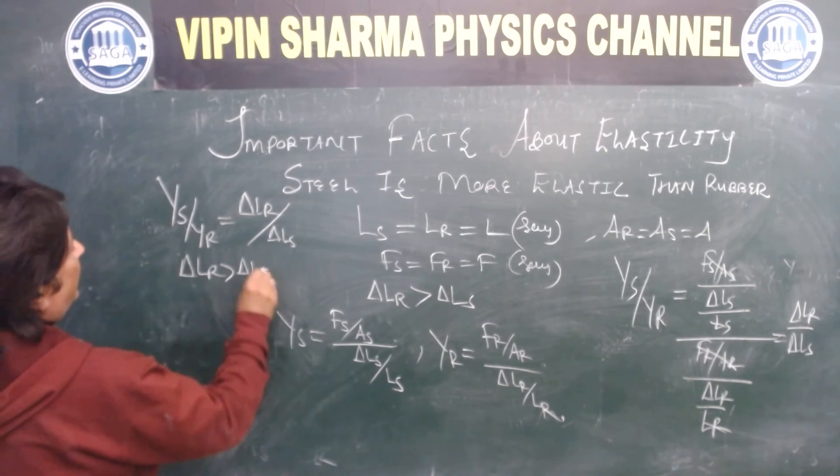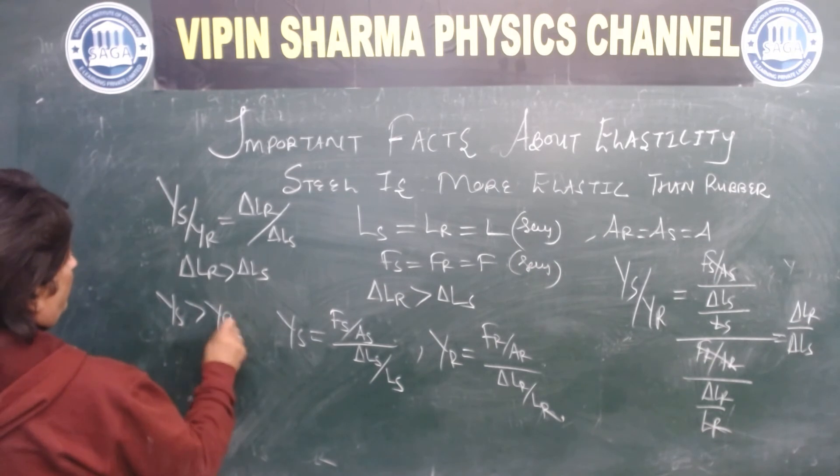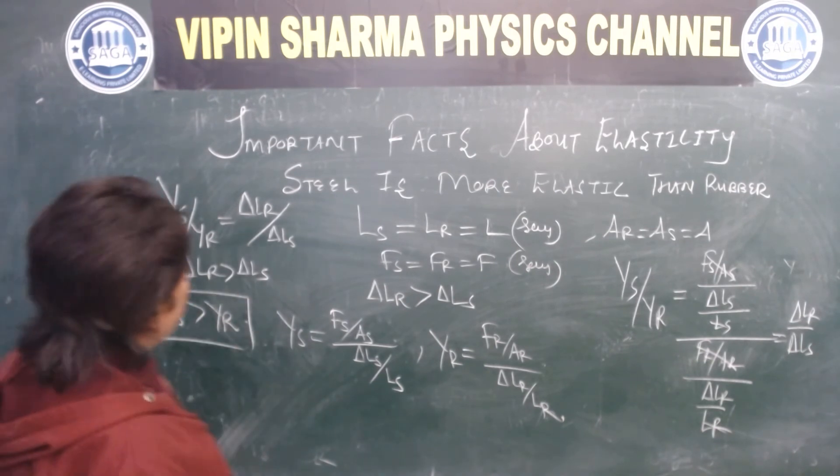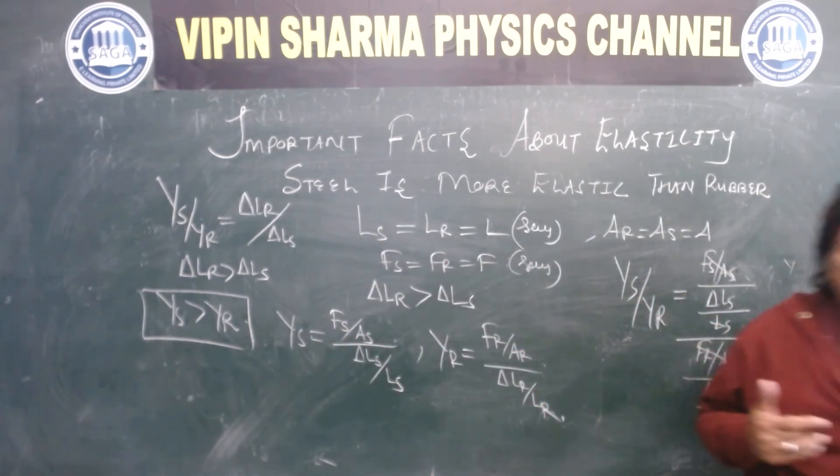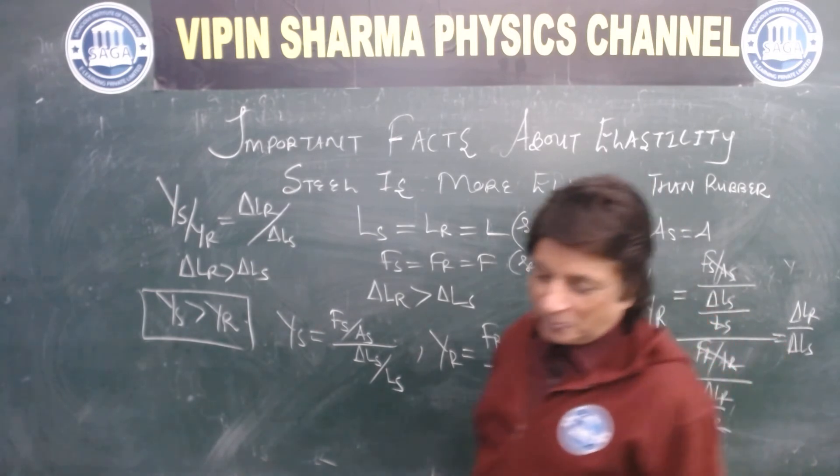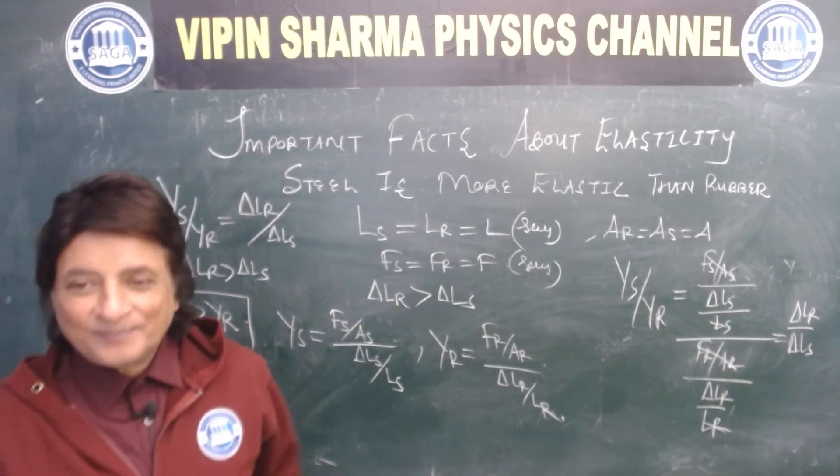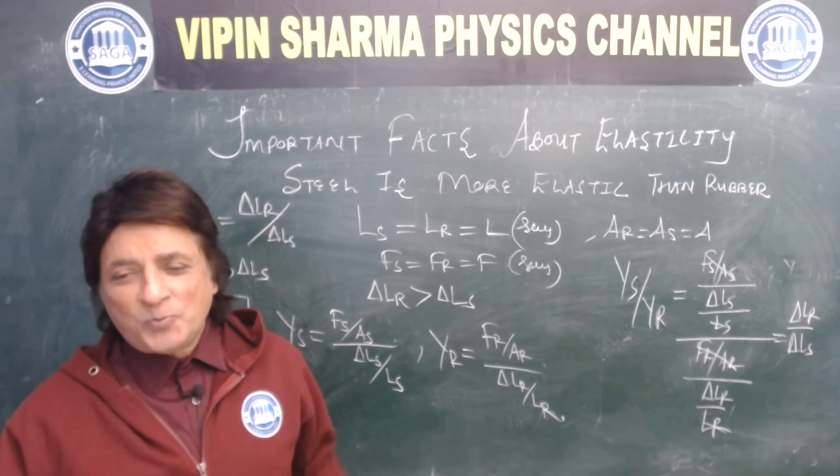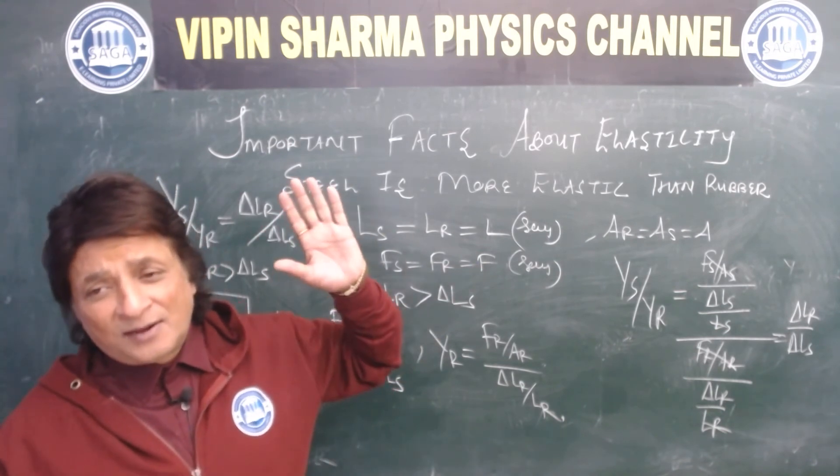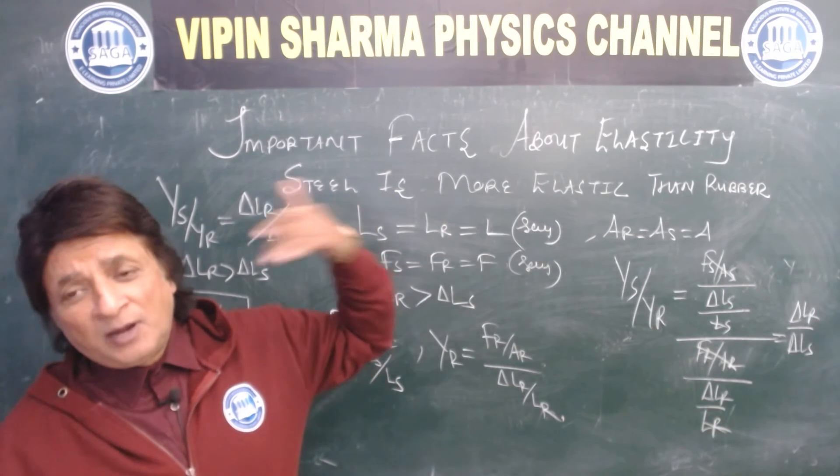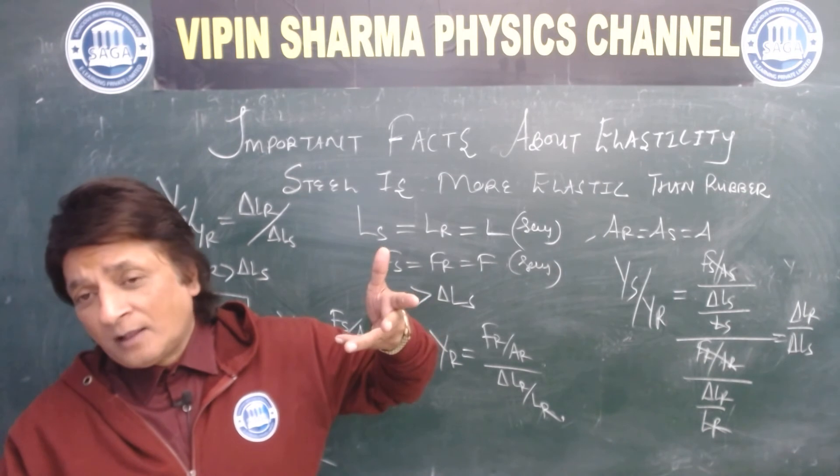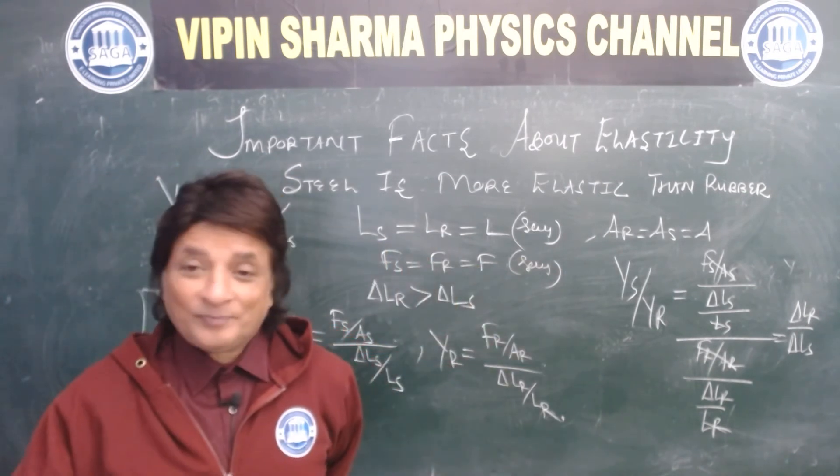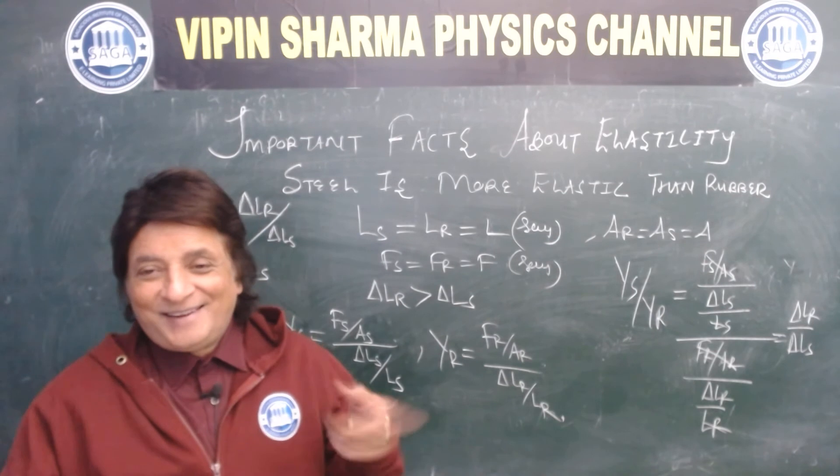So what we get is delta lr upon delta ls. This equals ys upon yr. Copy pe likh ke dekho. Delta lr upon delta ls. So delta lr is greater than delta ls, therefore ys is greater than yr. Means steel is more elastic than rubber. How is it? Simple.